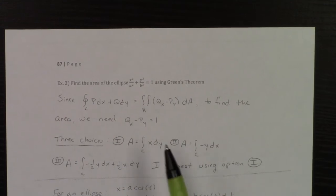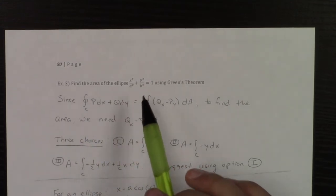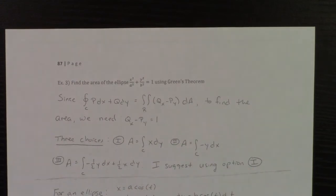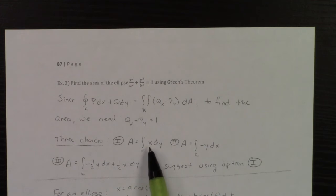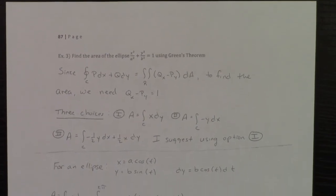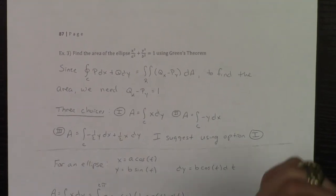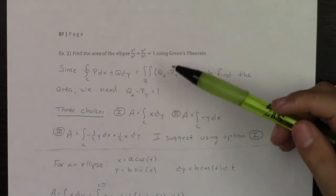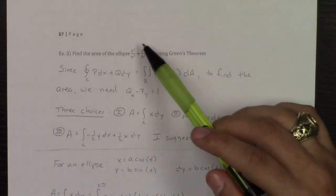Honestly, if you're going to compute the area of something using a line integral, I would just use the line integral of x dy. Now, going to this problem, if I want to find the area of this ellipse using Green's theorem, then I'm going to say that area is the line integral of x dy.